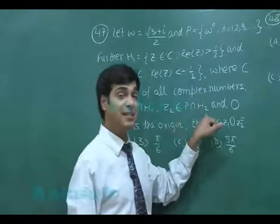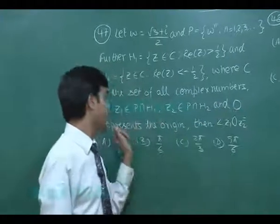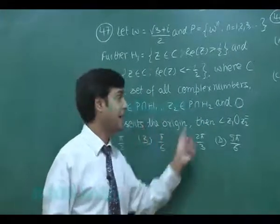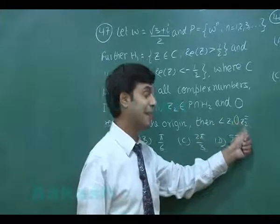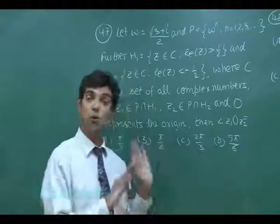If z1 belongs to P intersection H1, z2 belongs to P intersection H2, and O represents the origin, then angle z1-O-z2 is equal to - four options are given.